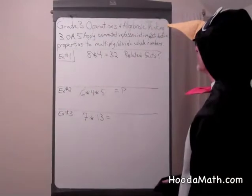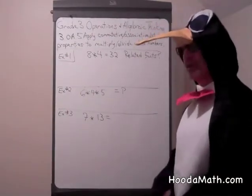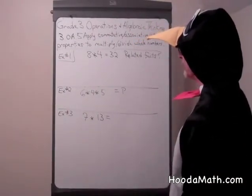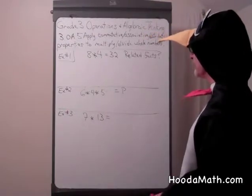What we're going to be looking at today is applying various number properties, commutative, associative, and distributive properties, to multiply and divide whole numbers.